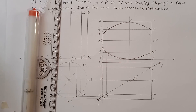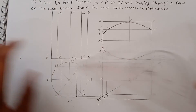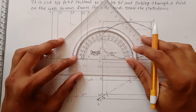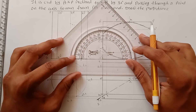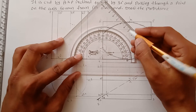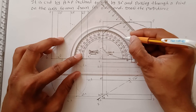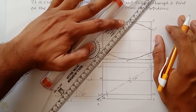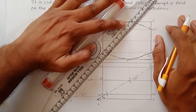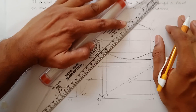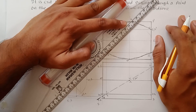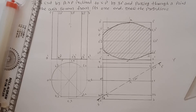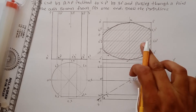Draw hatching lines to indicate the sectional part. Draw the hatching at an angle of 45 degrees, taking any point as a reference, and draw parallel hatching lines to fill the sectional area.